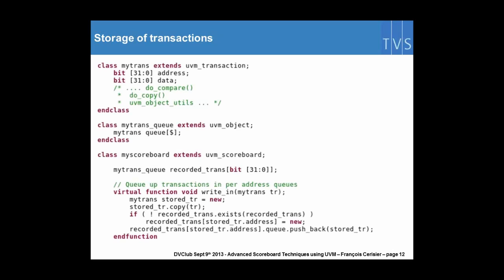Again, an example of the scoreboard. We rely on an existing transaction. We rely on the fact that the do-compare method, which is a UVM method, is implemented. We create a queue of transactions here, a dynamic array of transactions, and we want to store them and index them by address so that we can actually store more than one transaction with the same address within our data structure.